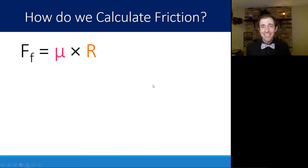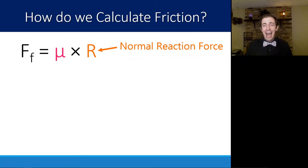We can calculate this force of friction with a really simple relationship. We say that the force of friction is equal to μ times R. We've seen this symbol R before, the normal reaction force. It is how much the surface is pushing back on an object.